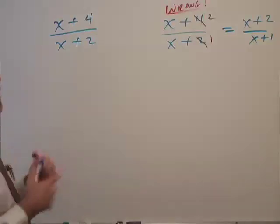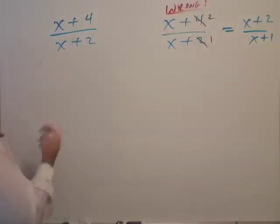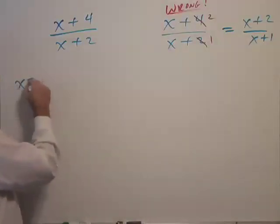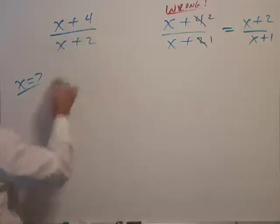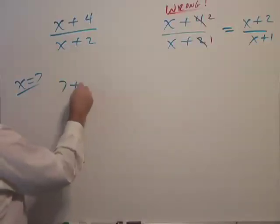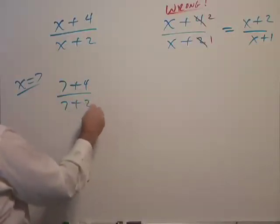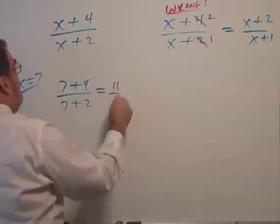Suppose let's just pick a number at random. Suppose that x was equal to seven. Let's see what happens. Well, when I plug seven into the original problem, I get seven plus four over seven plus two, which is 11 over nine.